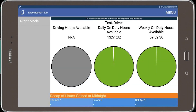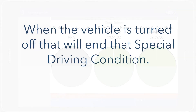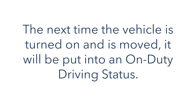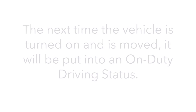When the vehicle is moving, your driving function screen will show. However, the left clock will be grayed out. When the vehicle is turned off, that will end that special driving condition. The next time the vehicle starts up and is moved, it will put you into an on-duty driving status.